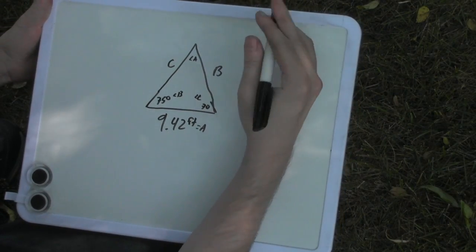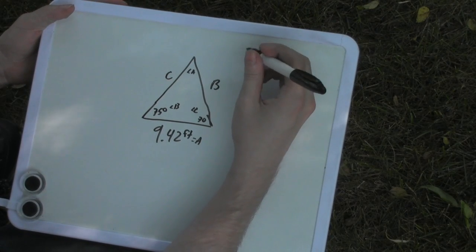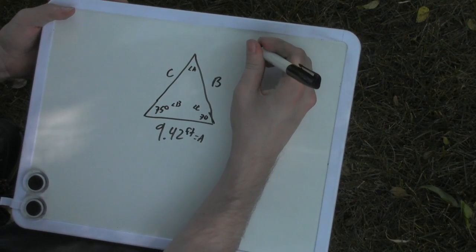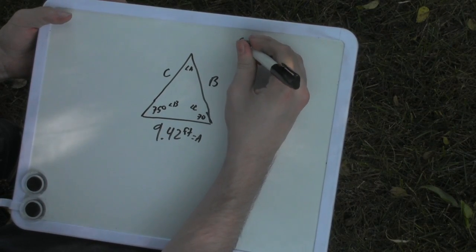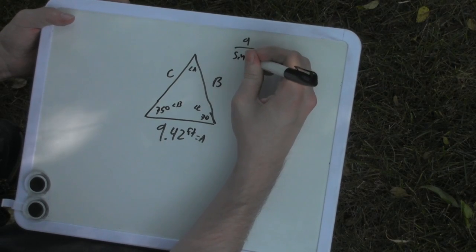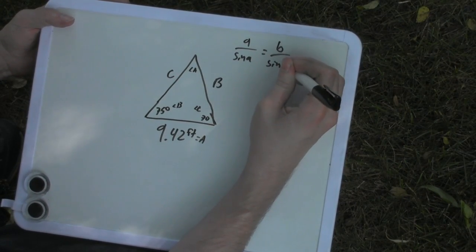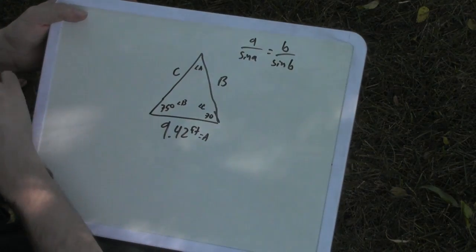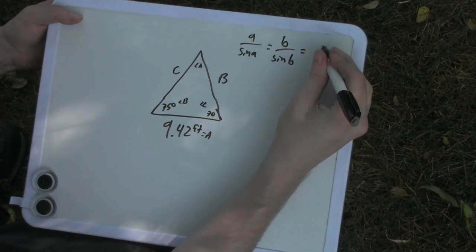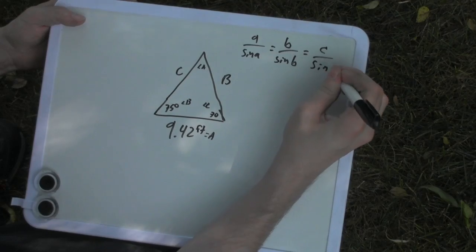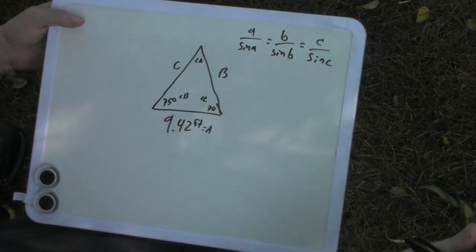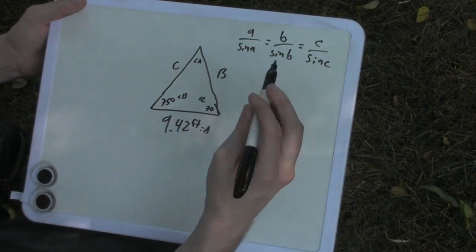All right, so now we can do the math. The law of sines looks something like this: we have A over sine A equals B over sine B, which is equal to C over sine C. We can use either of these but we have to use A in this case because that's what we have.